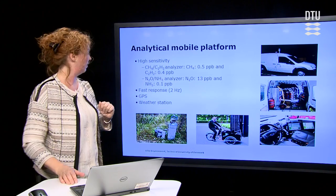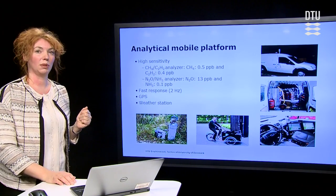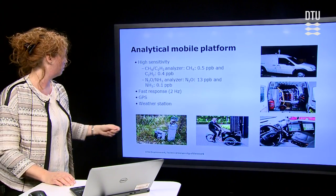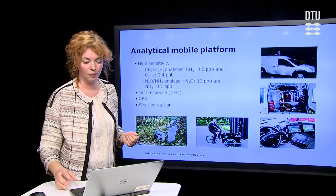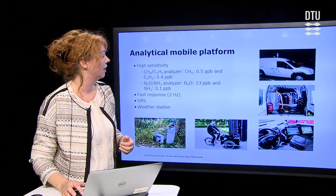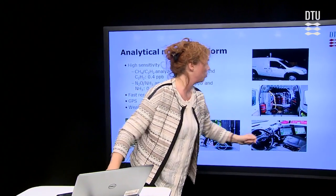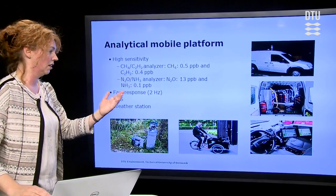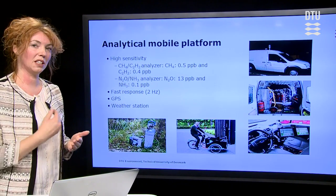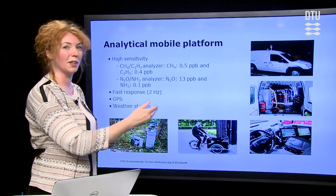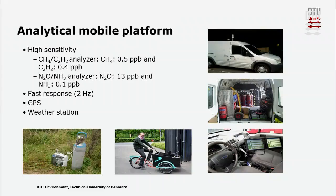In our measuring van, we also have GPS equipment and a weather station so that we can see in real time where we are and we can see the concentration. So we can actually see when we hit the plume — concentrations go up — and when we exit the plume. We can also look for different emission sources and so on.